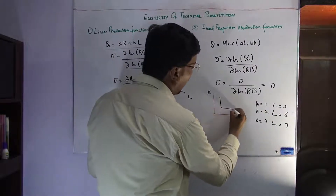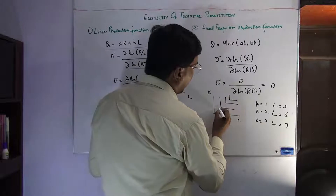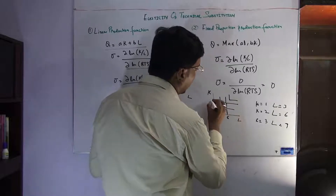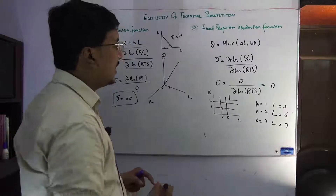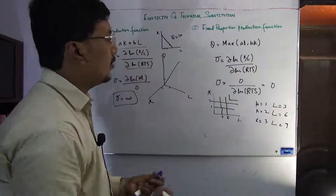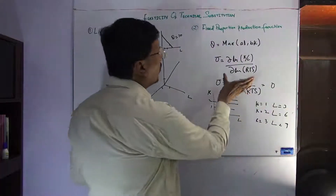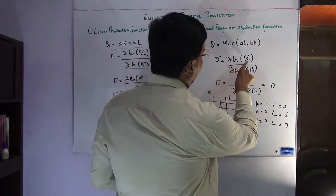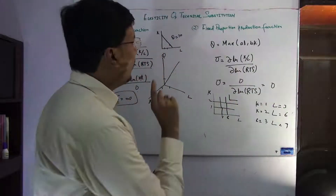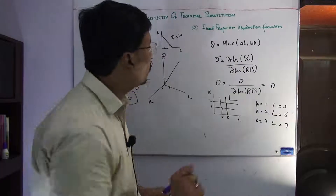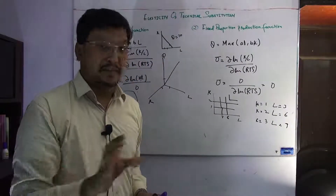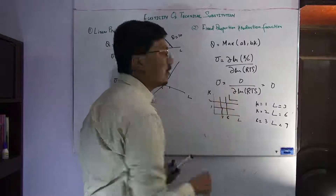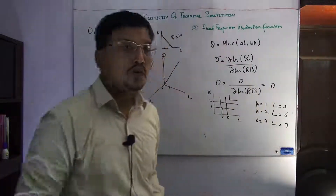For the fixed proportion production function, if you have L equal to 3 and capital equal to 1, then to scale you use L equal to 6, maintaining the proportion. Using the formula — change in capital-labor ratio divided by change in RTS — since we are not changing the proportion, the capital-labor ratio is the same, so the change is zero. Plugging zero in the numerator gives an elasticity of technical substitution equal to zero.